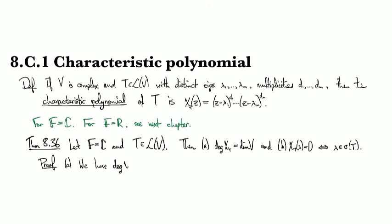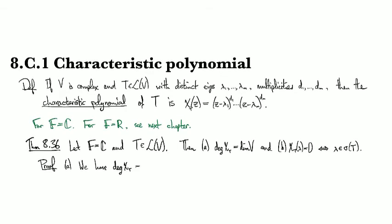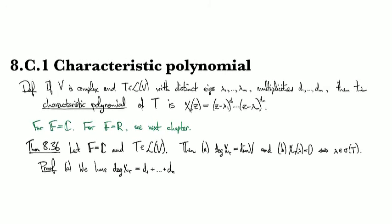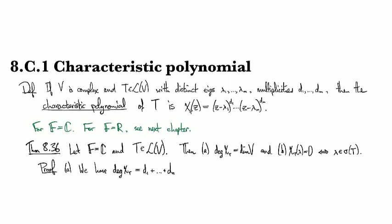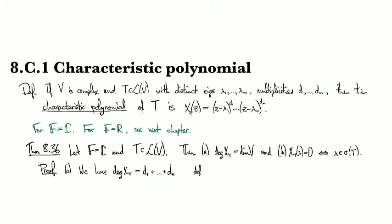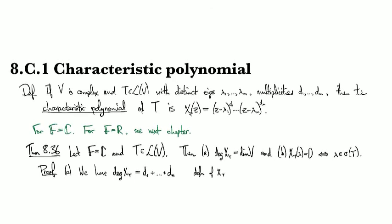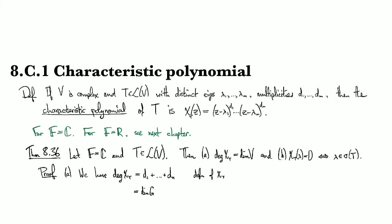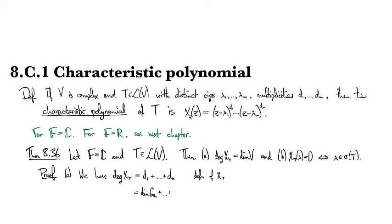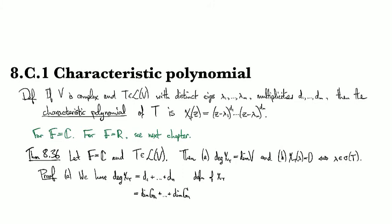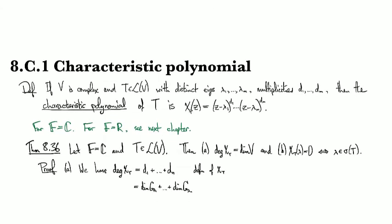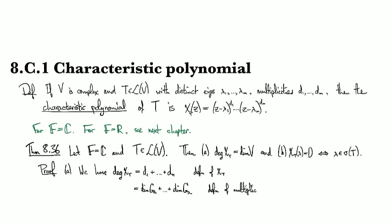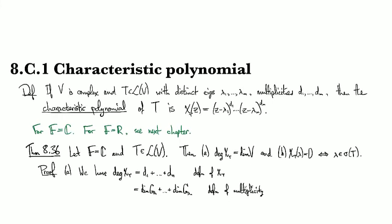For the proof, for the first part A, we have that the degree of the characteristic polynomial by definition is just going to be d1 plus up to, so we sum up those multiplicities. That's just by the definition of characteristic polynomial. Then by the definition of multiplicity, this is the dimension of the lambda 1 eigenspace summed up through dimension of lambda n eigenspace.